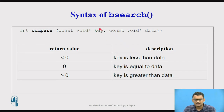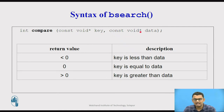If the key value and the data value are the same, we have found a hit — the element is present in the array. The compare subroutine returns zero when key equals data. When the difference of key and data is a positive value, it means key is greater than data and the key element is in the right subarray, so we move forward to the right subarray to search for the key element.